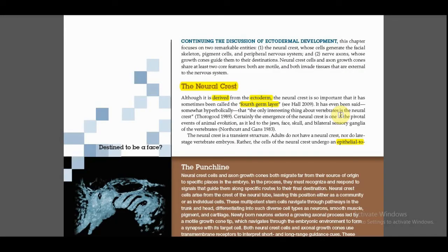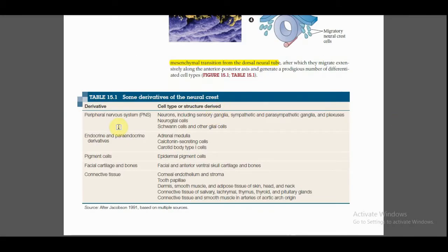Our next topic is differentiation of neurons. You must be clear about the concept of neural crest. Neural crest is sometimes called the fourth germ layer, even though it is derived from the ectoderm, because of its importance in animal evolution. The derivatives of neural crest include PNS, endocrine and paraendocrine derivatives, pigment cells, facial cartilage and bones, and connective tissues.